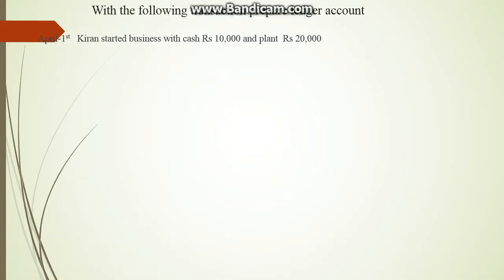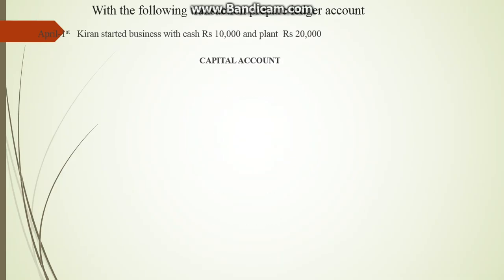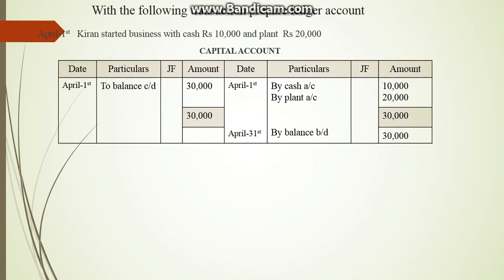Here is an example of how to prepare a Ledger account. With the following transaction, prepare a Ledger account: April 1st, Kiran started business with cash of rupees 10,000 and plant rupees 10,000. We have already passed the journal entry for this, so now we need to prepare the Ledger account. Cash is coming in and plant is coming in. Capital belongs to a personal account — debit the receiver, credit the giver, and Kiran is the giver. So we record: By Cash Account 10,000 and By Plant Account 20,000. The total of 30,000 is the commencement of business value.